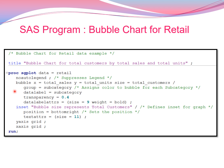In the bubble statement I can use advanced options such as group equal to subcategory, which assigns a color to the bubble for each subcategory. If you want data labels, you can mention datalabel equal to subcategory.